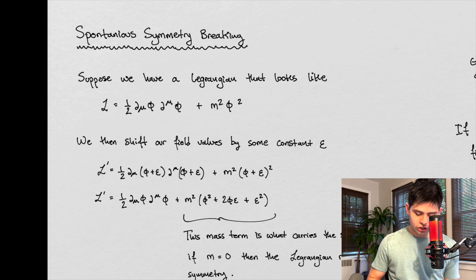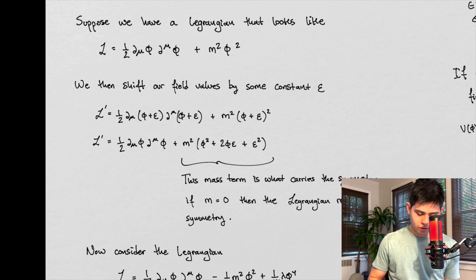So suppose we want to shift our Lagrangian. We want to shift the field values, right? So we want to shift these guys right here by some constant. And so we're going to plug that in. So this constant epsilon, we're plugging it in. And we're going to see what the new Lagrangian looks like when we plug in the shift constant.